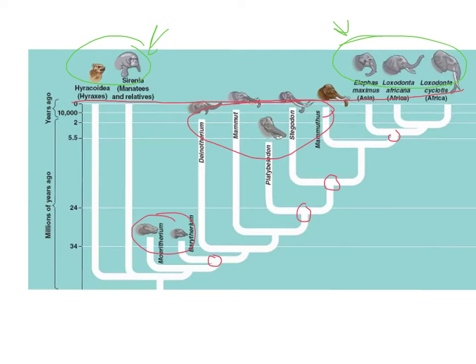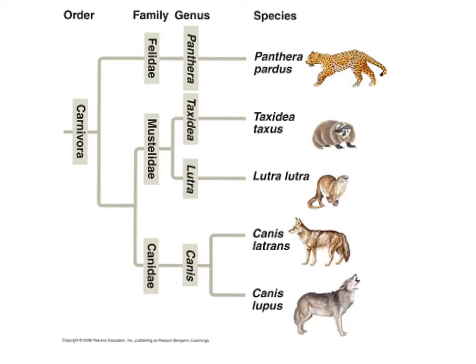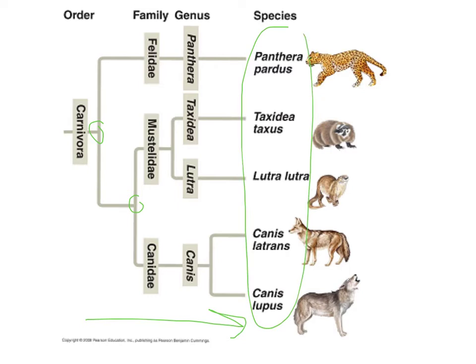Cladograms can also be organized horizontally — we could take the whole thing and turn it on its side. It would still mean exactly the same thing: we still have our nodes, divergent points, and various species. It's just oriented in a different direction, but still shows ancestral relationships and evolutionary history.